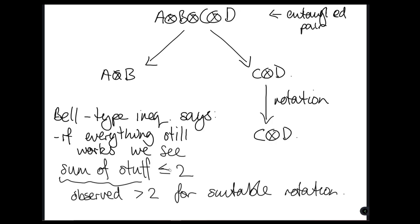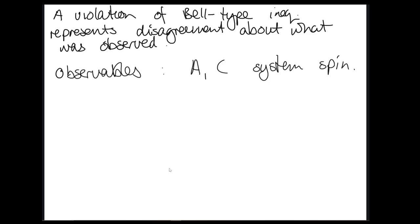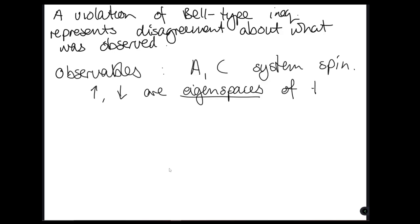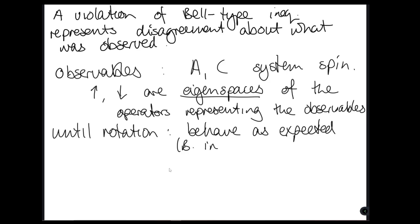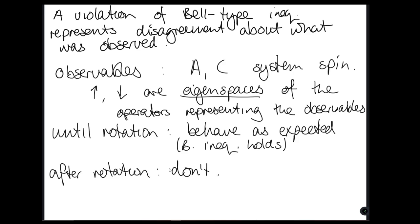I want to look at the maths in more detail to see what the representation tells us is happening. Our observables are operators corresponding to systems A and C. Up and down are eigenspaces of the operators representing the observables. Until rotation, these behaviours — meaning Bell-type inequalities holding — apply. After rotation, they don't. There's a mathematical structure going on here: until rotation, the A⊗B and C⊗D operators commute. After rotation, they don't commute.